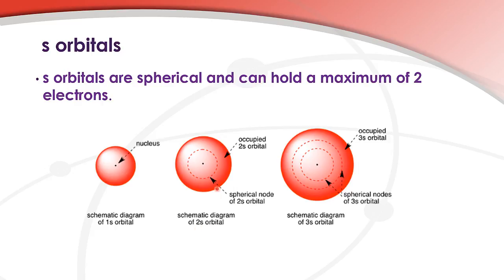This is a 2s orbital here. It's further away from the nucleus than the 1s orbital. And this is a 3s orbital, the outer part here. As you can see it's further away from the nucleus than the 2s, which is further away than the 1s, which is closest to the nucleus. These nodes — these dotted lines here — represent regions where there's a 0% chance of finding an electron.